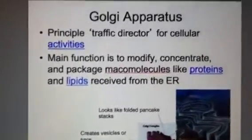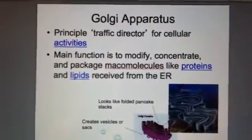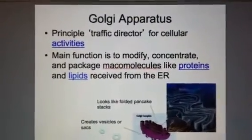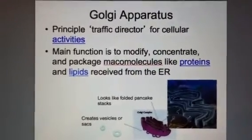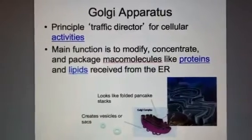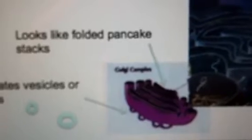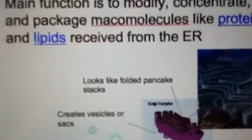On slide 12, we're looking at the Golgi complex, or apparatus. It's thought of as the traffic director for all cellular activities. Some people also refer to it as a post office. Its main function is to modify, concentrate, and package up macromolecules — large molecules like proteins and lipids processed in the ER. The Golgi apparatus looks like a stack of folded pancakes; it's a membrane network folded back on itself, with little vesicles or sacs created on it to transport things.